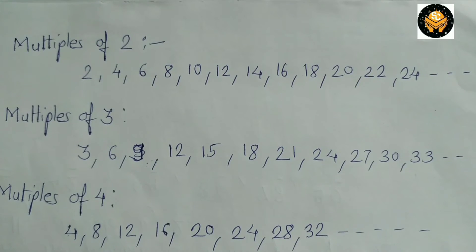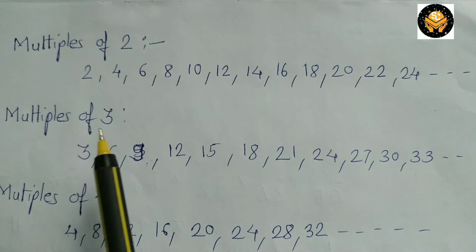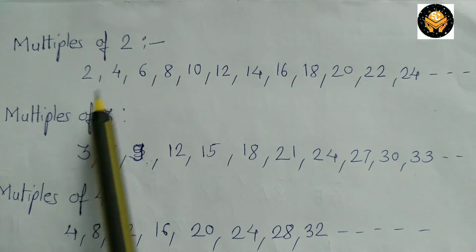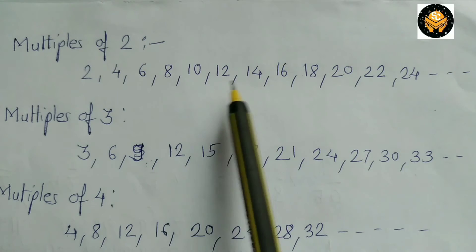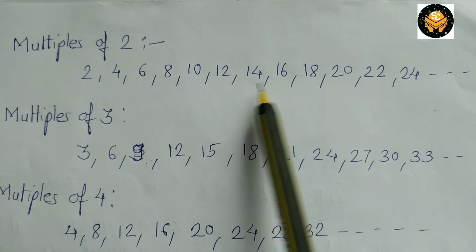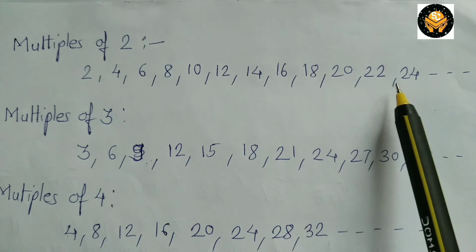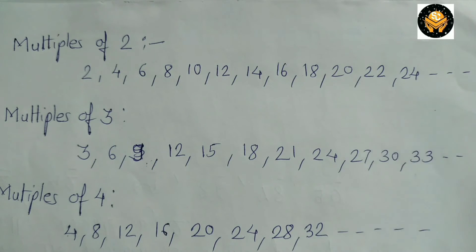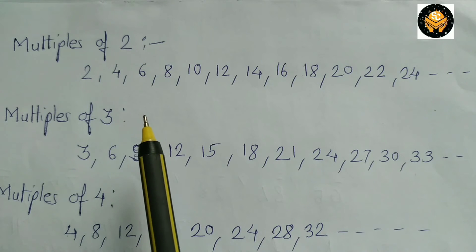The numbers in the 2 times table are the multiples of 2. So 2, 4, 6, 8, 10, 12, 14, 16, 18, 20, 22, 24 and so on are the multiples of 2.